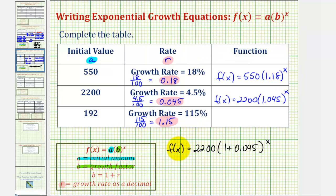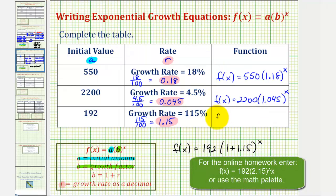And then for the last row, we'd have f of x equals 192 times 1 plus 1.15 raised to the power of x. And therefore, the exponential growth function is f of x equals 192 times 2.15 raised to the power of x.